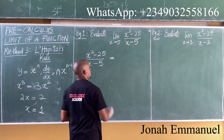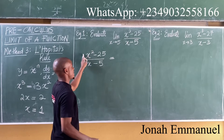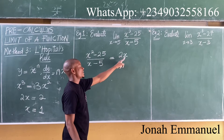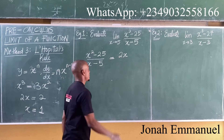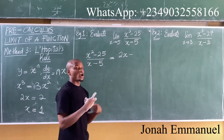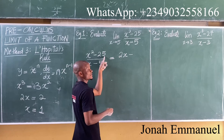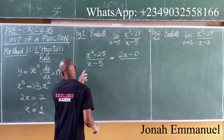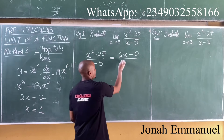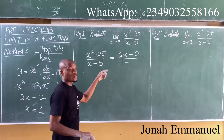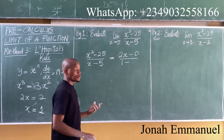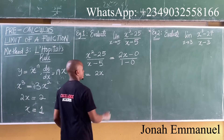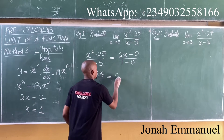The function here is (x squared minus 25) all over (x minus 5). If I differentiate x squared, this gives you 2x. Differentiating the constant 25 gives 0. Differentiating x gives 1, and differentiating the constant 5 gives 0. So this becomes 2x minus 0 all over 1 minus 0, which equals 2x.